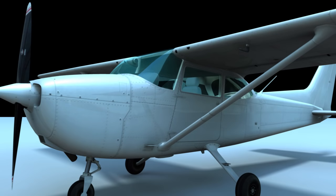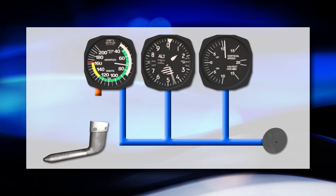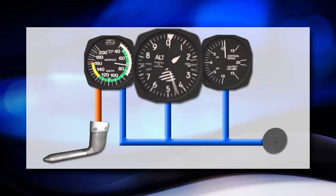The pitot tube and static port openings are connected to tubes that join into the pitostatic instruments. The pressure inside the instruments match the pressure of the outside atmosphere. All three pitostatic instruments connect to the static port, but only the airspeed indicator connects to the pitot tube. Sounds simple, right? Let's discuss how each pitostatic instrument works.